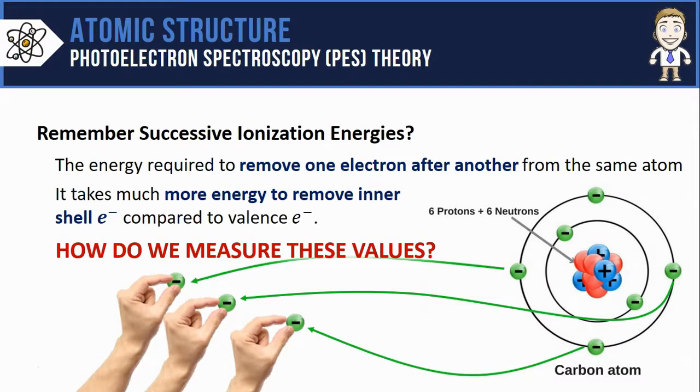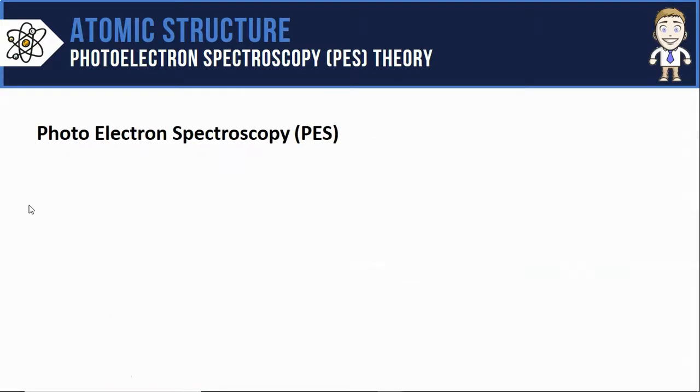In this video however we'll ask a different question, which is how exactly can you measure these values? And of course one way that you can measure these ionization energies is with something called photoelectron spectroscopy, or PES for short.